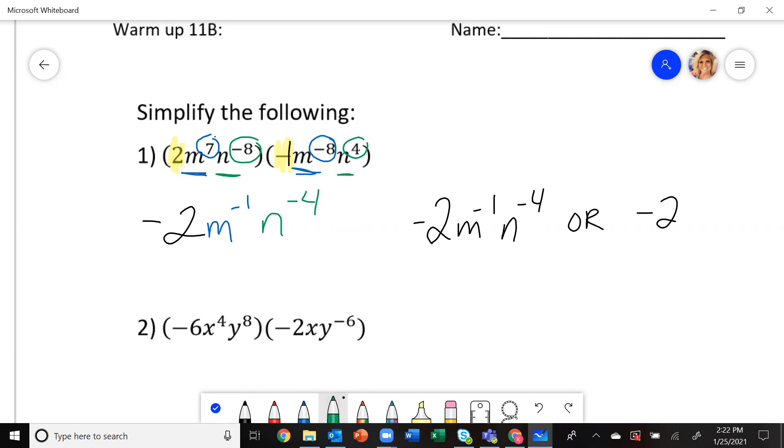But really, this is all over one. So if I rewrite it to get positive exponents, I'm going to make this a fraction and it's going to go m and then n to the fourth power. It's going to change it to positives.